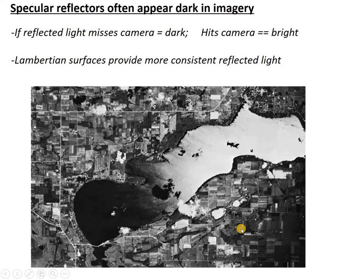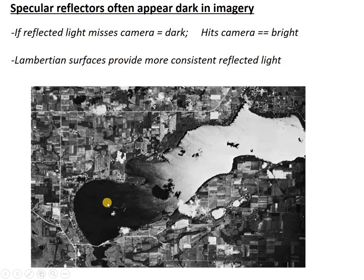Here's an example: a photograph of a lake that is fairly calm. Let's say the sun is off to the right. Where the sun hits one part of the lake, the angle is perfect to reflect back to the camera, making that part appear bright. But as the sun's angle comes over and hits the other side, the reflection misses the camera. So even though the whole lake is experiencing a specular reflection from the sun, only the photons hitting one area are actually reflected back — making that side bright and the other dark. If it were a Lambertian surface, it might all be the same color.